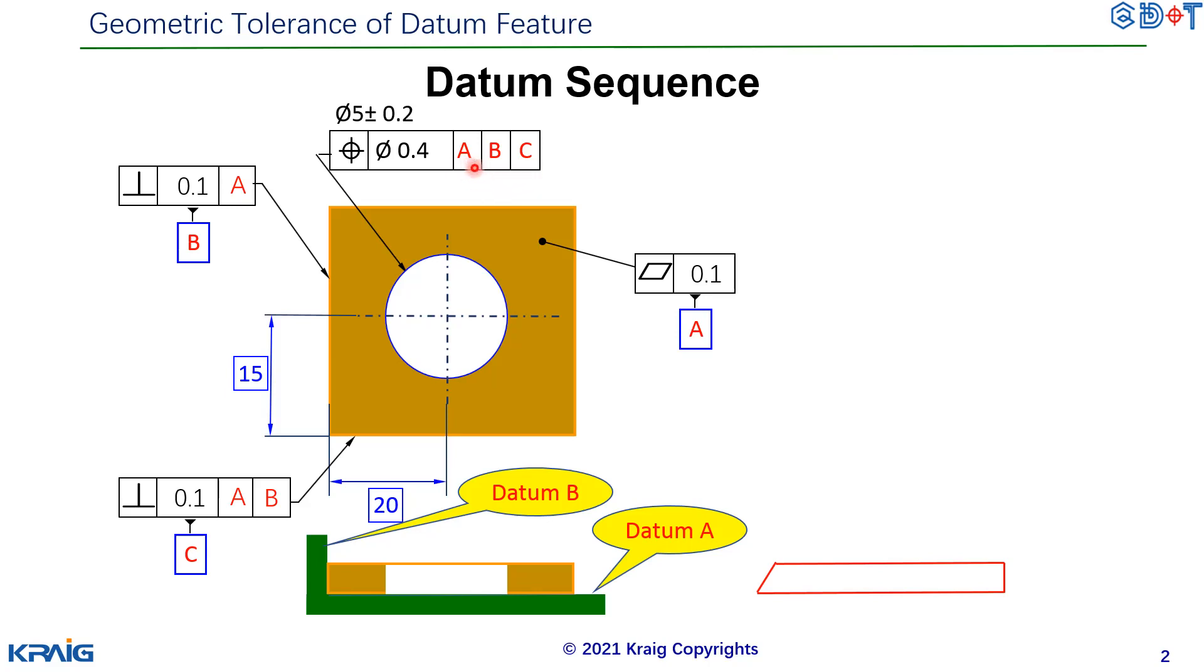For datum A, they're supposed to be form tolerance only, because this is the primary datum.